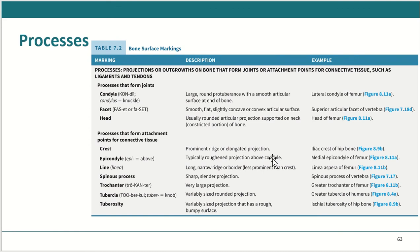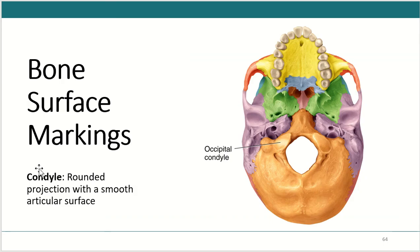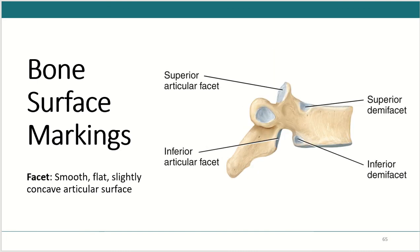Next we have the various types of processes — projections or outgrowths of bone that form joints or serve as attachment points for connective tissue like ligaments and tendons. The first type is the condyle: a rounded projection with a smooth articular surface, such as the occipital condyle. Next is the facet: a smooth, flat, slightly concave articular surface that forms a joint, such as the superior articular facet.